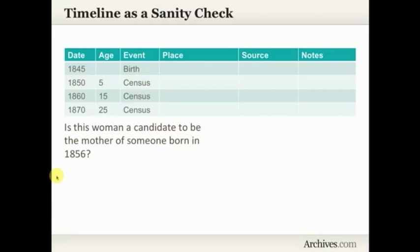I also like to use timelines as a sanity check. If a woman was born in 1845, in the 1850 census she should be 5, in 1860 she should be 15, and in 1870 she should be 25. Does this woman seem a candidate to be the mother of someone born in 1856? Probably not — in 1856 she would have only been 11, which is too young. The timeline makes it easy to compare dates and ages as a good sanity check.